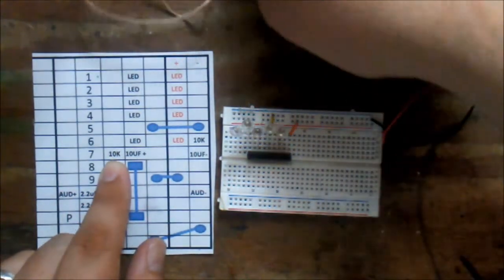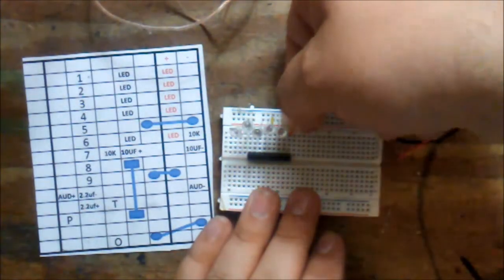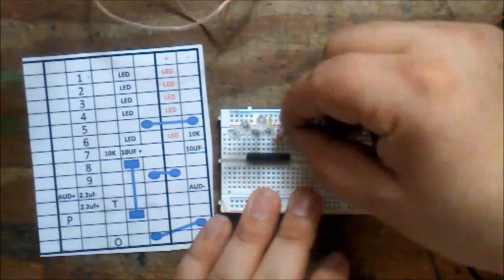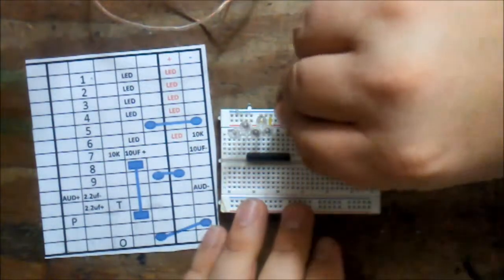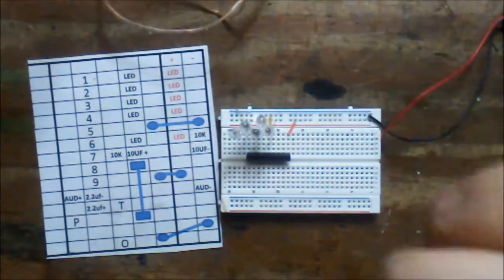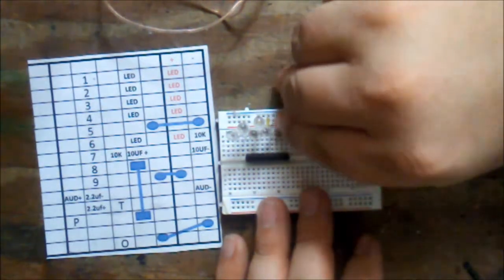Then row six is LED, row seven is a 10K, it goes from six to negative. Remember, the resistors are not polarity, so you can put them any order you want.